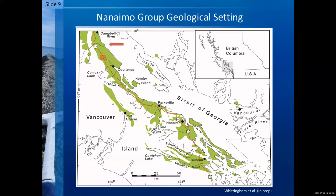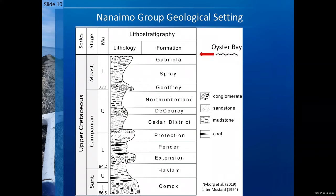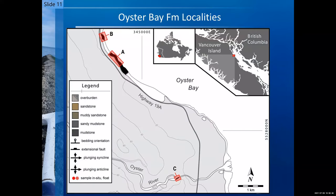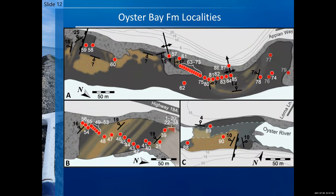Our region here is on Vancouver Island, just south of Campbell River — that is the area of excitement. That is the Oyster Bay Formation, yet to be formally described, which is unconformably overlying the Nanaimo Group strata. Here's a stratigraphic column of the full Nanaimo Group, and we would be right above that with the Oyster Bay strata. It's broken into three principal outcrops: A is the classic Appian Way, B just to the north is the Linwood section, and C to the south is a small outcrop along the Oyster River, with all those red dots indicating sites of matrix sampled for this study.